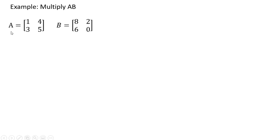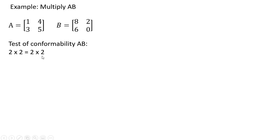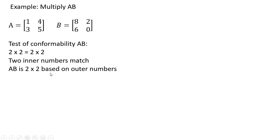Let's do an example. We want to multiply matrix A times matrix B. First we need to test whether we can actually multiply these two matrices. Matrix A is 2 by 2, and matrix B is 2 rows by 2 columns. The two inner numbers match, so we can calculate the product of A times B. AB is going to be a 2 by 2 matrix, and that's based on the outer numbers.